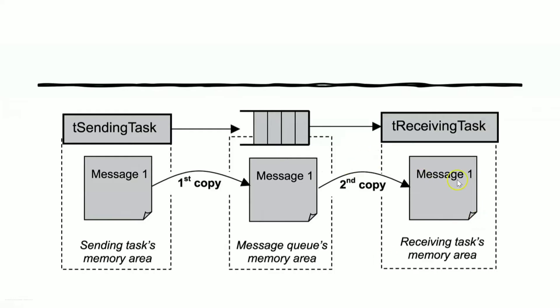Regarding memory copying: the message is initially present in the sending task's memory area. In order to send data to the message queue, a first copy is made and given to the message queue, stored in the message queue's memory area. After the buffering time, a second copy is made and given to the receiving task, which is then present in the receiving task's memory area. This is how memory copying happens.